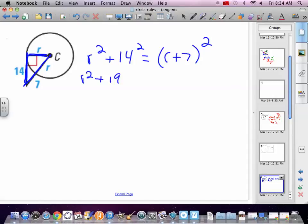So, R squared plus 196. You've got to remember how to do this from algebra. R plus 7 quantity squared is R plus 7 times R plus 7. Which, some people remember as FOIL, just distributive property. R times R. R squared. R times 7. 7R.